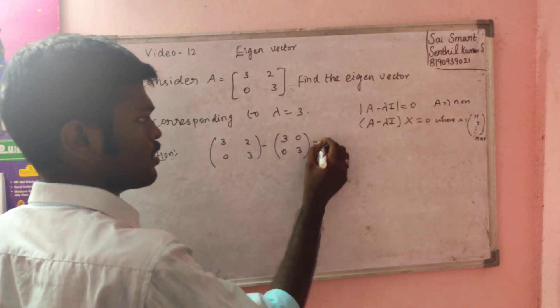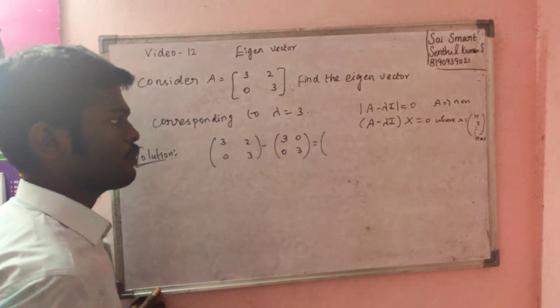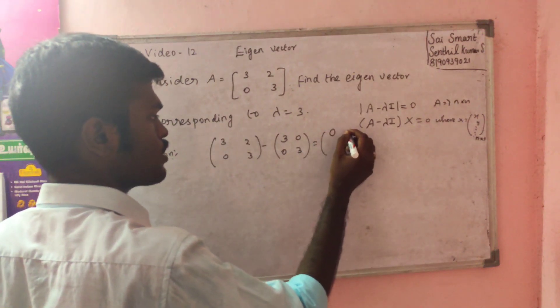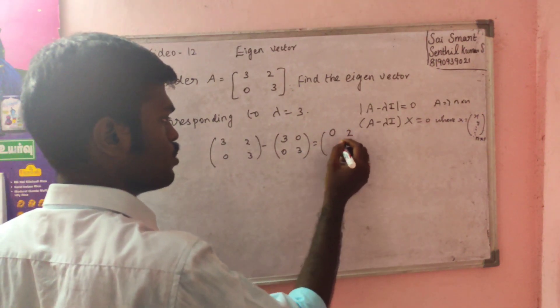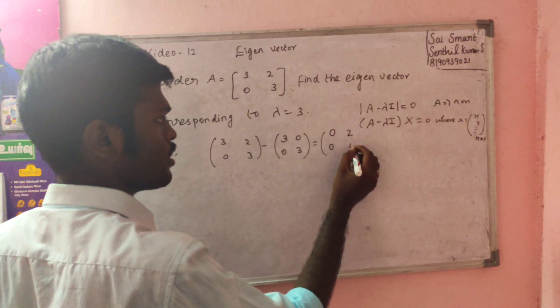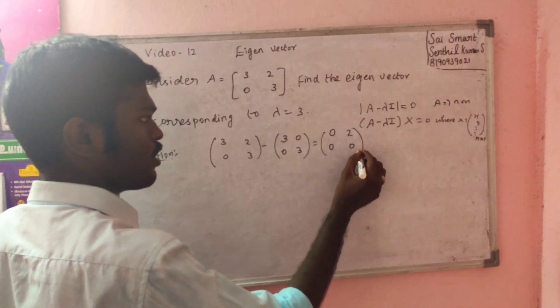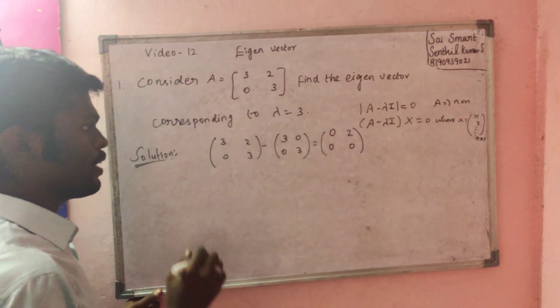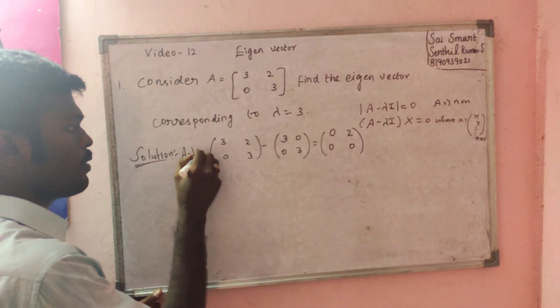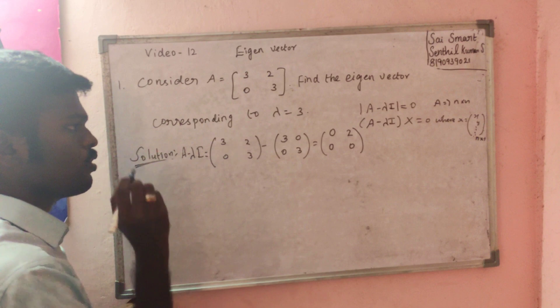So the result will be: A minus lambda I equals [3-3, 2-0; 0-0, 3-3] which equals [0, 2; 0, 0]. This is the A minus lambda I matrix.